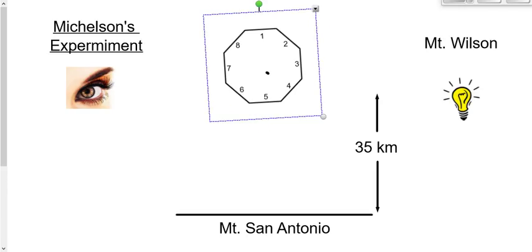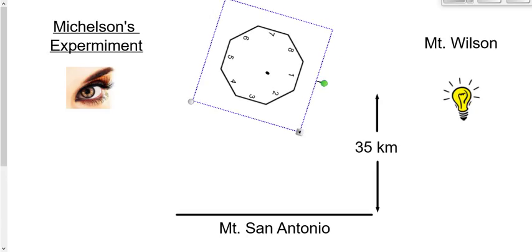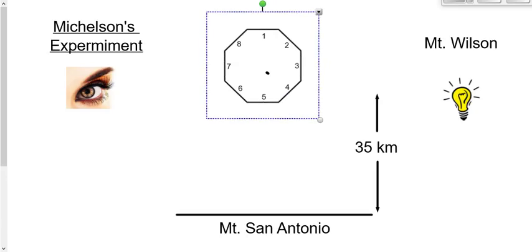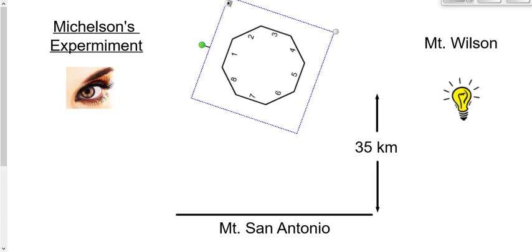The rotating mirror experiment involves an eight-sided object with a mirror on each face, like this, that will rotate. So, you've got a mirror on each side, and then the mirror will rotate like this. We could spin it at whatever frequency we want to spin it at.